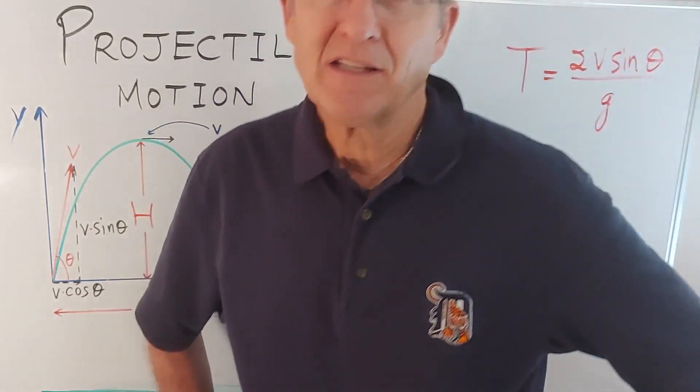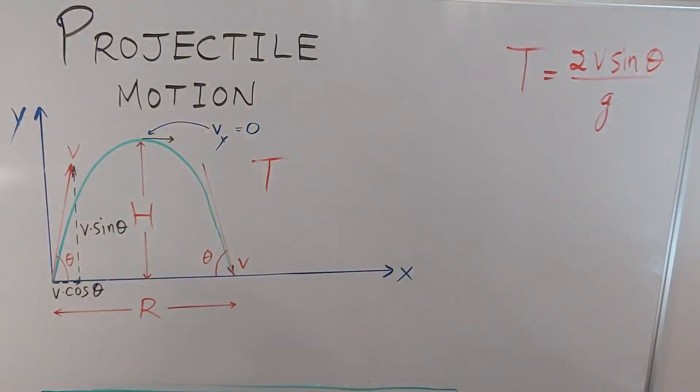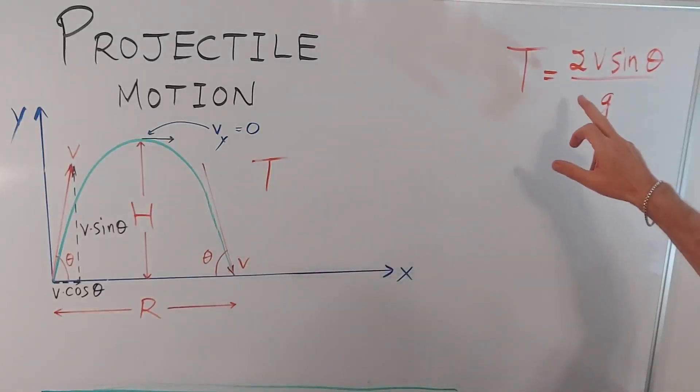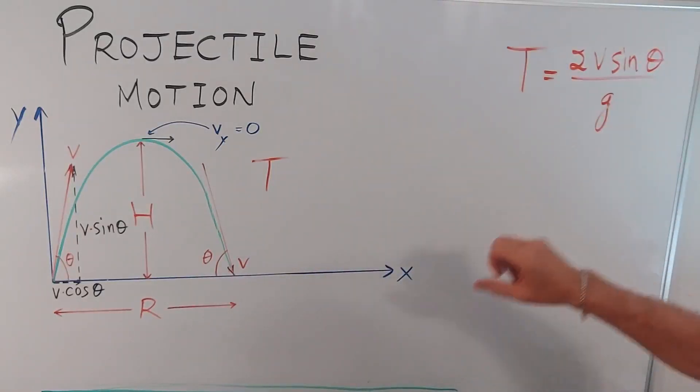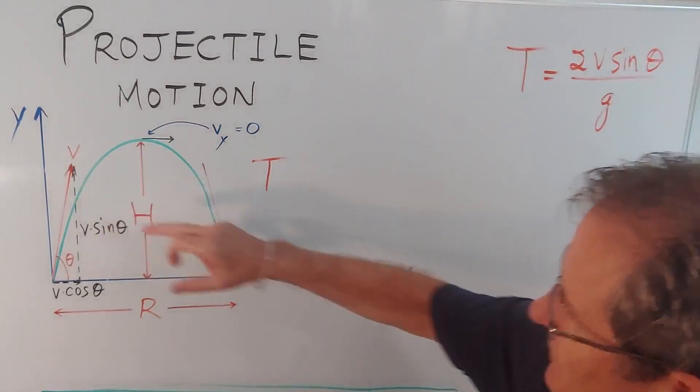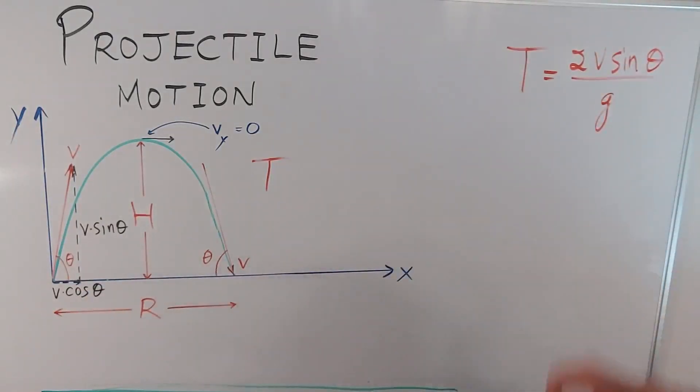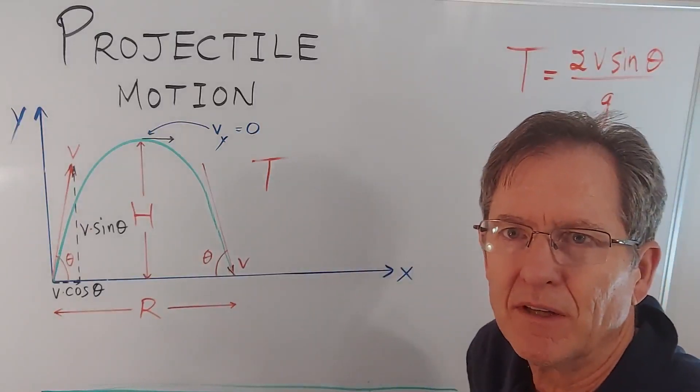Now in the last video when we talked about projectile motion we came up with the formula for the time in the air when the projectile is launched and lands at the same height. It was 2 times the original launch speed times the sine of the angle at which it was launched divided by g, the acceleration due to gravity.